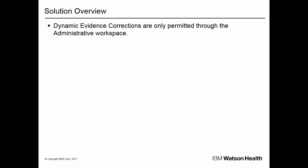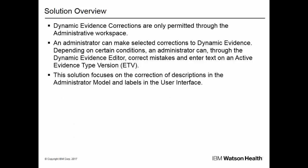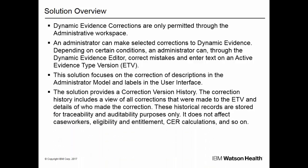In Kuram version 702, a solution has been implemented to allow agencies to make corrections to dynamic evidence configurations. Dynamic evidence corrections are only permitted through the administrative workspace. An administrator can make selected corrections to dynamic evidence. Depending on certain conditions, an administrator can, through the Dynamic Evidence Editor, correct mistakes and enter text on an active evidence type version. This solution focuses on the correction of descriptions in the administrator model and labels in the user interface. The solution also provides a correction version history, which includes a view of all corrections made to the ETV and details of who made the correction.